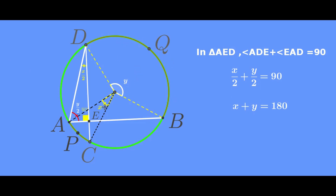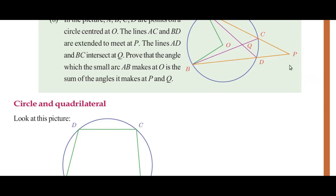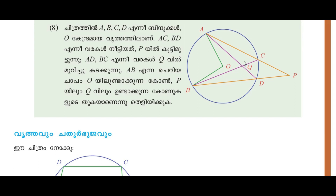Here we have a partial function for x and q and y. The number is equal to a, b, c, d — points on the circle. The lines AC and BD are extended to meet at P. The lines AD and BC intersect at Q. Prove that the angle which the small arc AB makes at O is the sum of the angles it makes at P and Q.